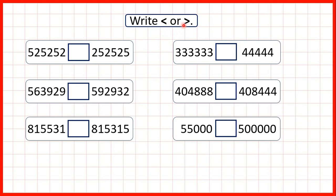We need to write less than or greater than. The first numbers we need to compare are 525,252 and 252,525. Here we have two six-digit numbers, so we start by comparing the larger place values. This number has five in the hundred thousands and this number only has two, so we don't need to look at any digits that follow. We know straight away that this first number must be our larger number.